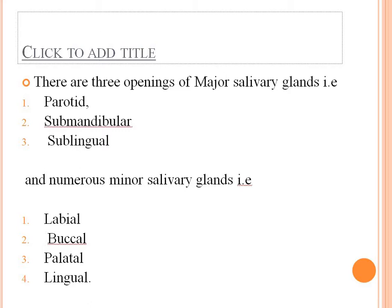There are three openings of the major salivary glands: the parotid, the submandibular, and the sublingual. There are also numerous minor salivary glands, examples being the labial, buccal, palatal, and lingual.